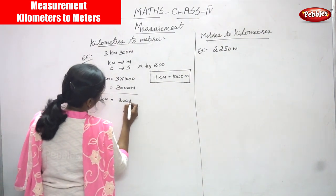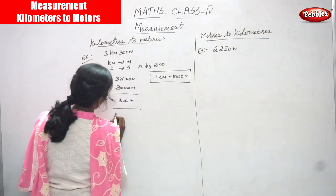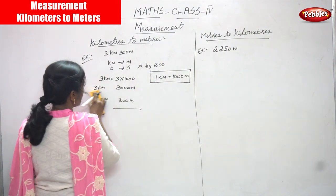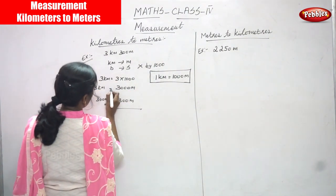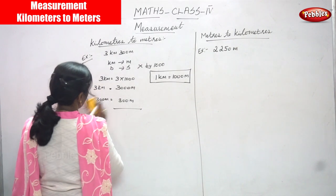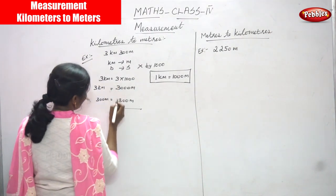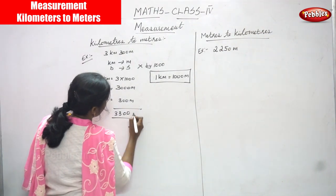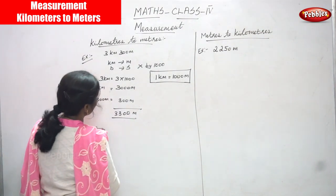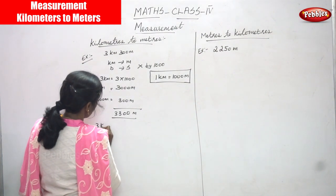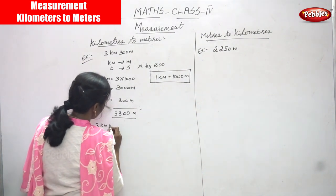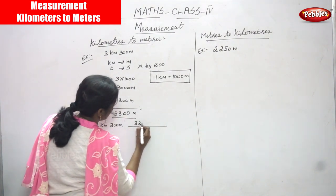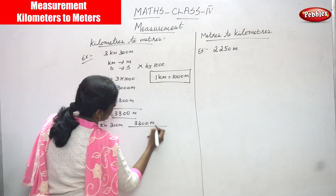300 meters is already given, so you have to add both. That means 3000 plus 300: 0 plus 3 is 3, and that gives 3300 meters. That means 3 kilometers and 300 meters converted into meters.